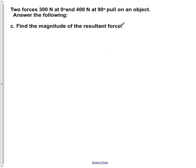Part C says find the magnitude of the resultant vector. So once again we are going to draw our sketch of our vectors. We have the 300 N at 0 degrees, and we are going to have the 400 N at 90 degree angle. And now we have our resultant vector R.